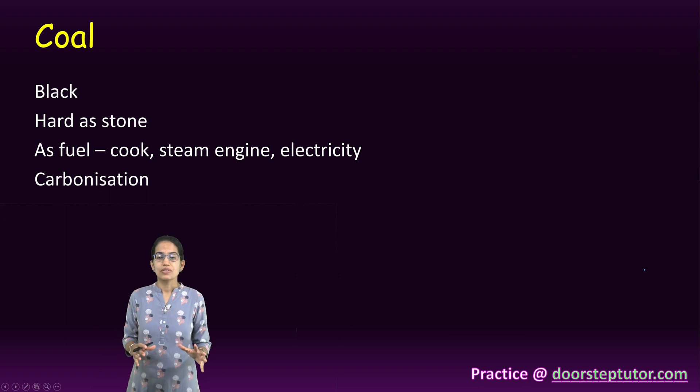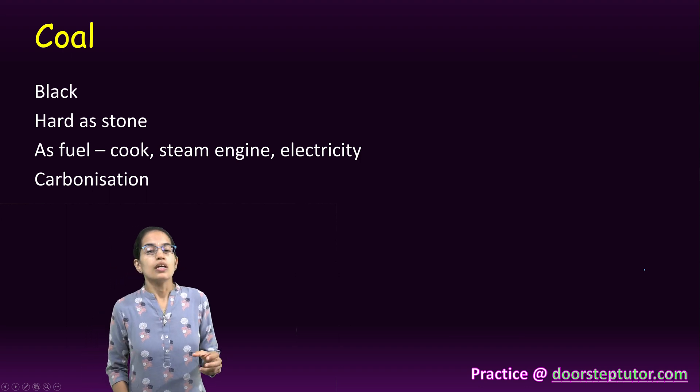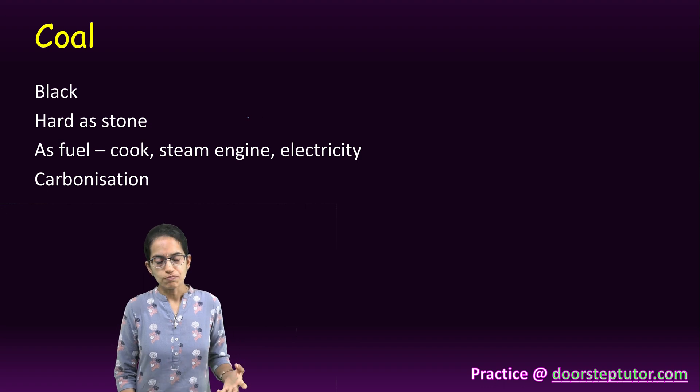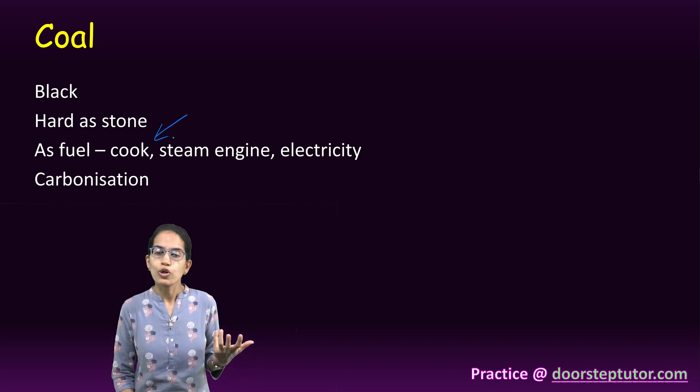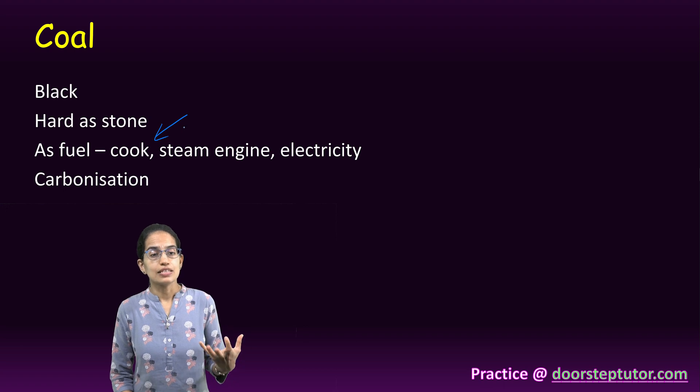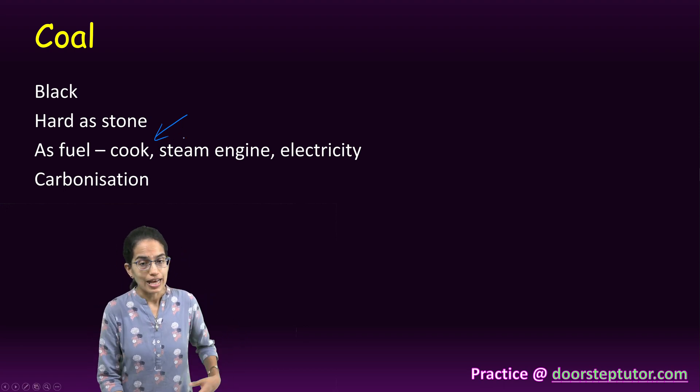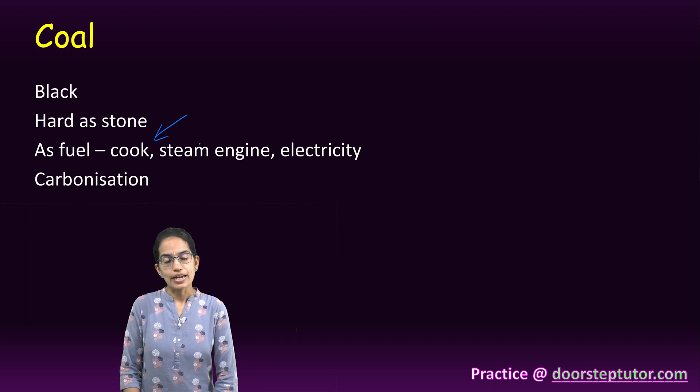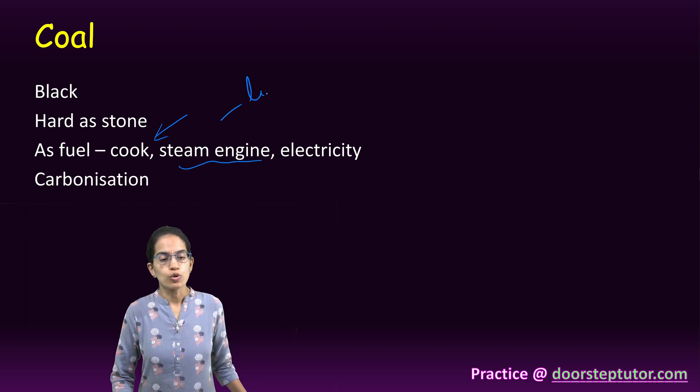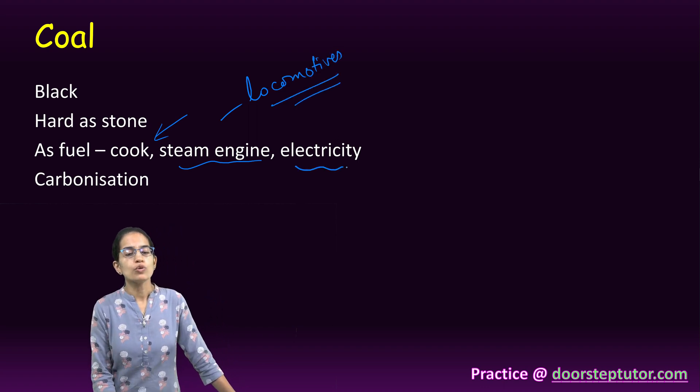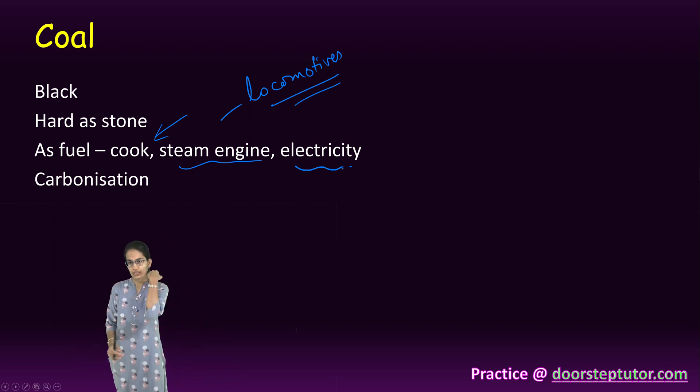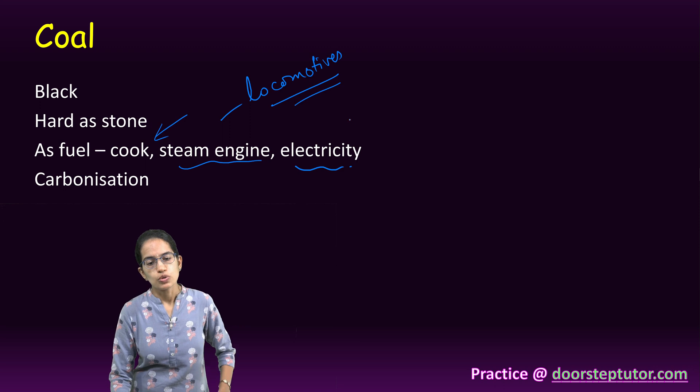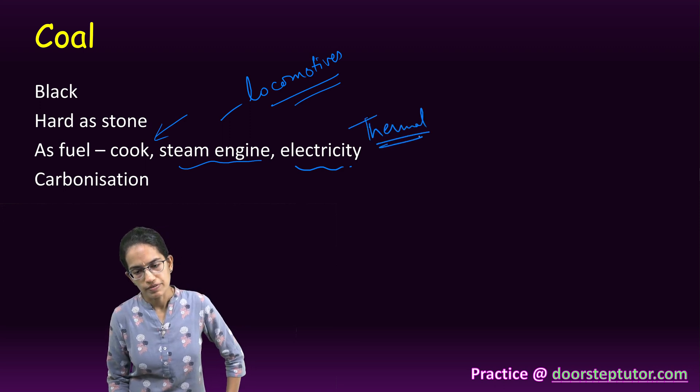Coal is black in color. It is considered as hard as stone. This coal can be used for variety of purposes. In ancient times, it was used for cooking. Still, in remote areas where you do not have gas connections, coal is used as one of the means for cooking. Coal in the prior days was used in steam engines for locomotives, for railways. Coal was also a source of electricity through thermal power stations.